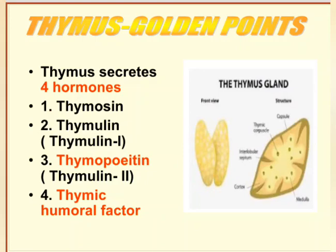Now let us see what hormones are secreted by the thymus gland. As already discussed in the neat point, the thymus gland secretes thymosin. But in the golden point, the thymus gland actually secretes four hormones: Number 1, Thymosin; Number 2, Thymulin (or Thymulin 1); Number 3, Thymopoietin, otherwise called Thymulin 2; and Number 4, Thymic Humoral Factor.